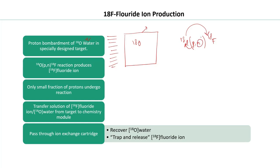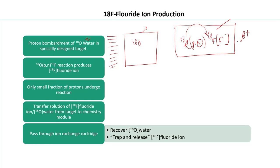The F-18 formed is not simply F-18 atoms but rather F-18 fluoride ion — the same type of fluoride found in toothpaste, but in this case radioactive, decaying to the ground state by emitting a positron. Only a small fraction of the protons undergo the reaction to produce F-18 fluoride ion; the other protons are lost as heat in the target. After bombardment, we are left with F-18 fluoride ion dissolved in O-18 water.